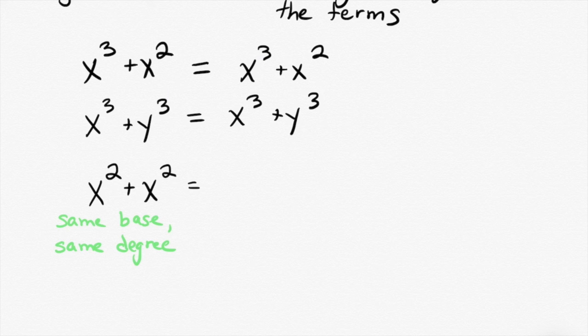So, any guesses what x squared plus x squared is? That is a really good guess. X squared times x squared is x to the fourth. Remember when we talked about our exponent rules a couple of weeks ago? When you multiply them, you add the exponents. X squared times x squared is x to the fourth. What's x squared plus x squared?